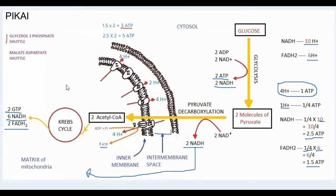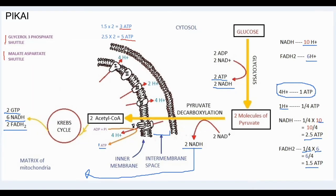The malate-aspartate shuttle does not bypass or skip any of the complexes, so we obtain 10 hydrogen ions in total in the intermembrane space, producing 2.5 ATP — just like a regular NADH molecule. For 2 NADH molecules: 2.5 × 2 = 5 ATP. So from the glycerol-3-phosphate shuttle we obtain 3 ATP in total, and from the malate-aspartate shuttle we obtain 5 ATP in total from the cytoplasmic NADH.